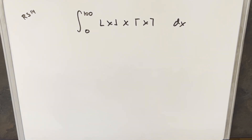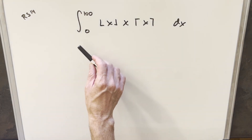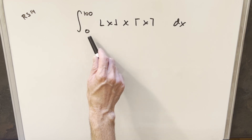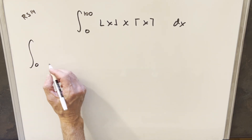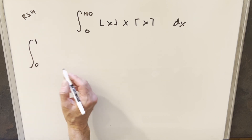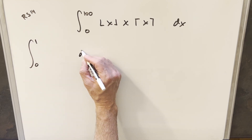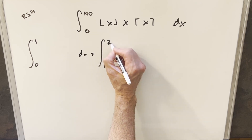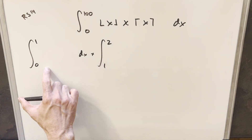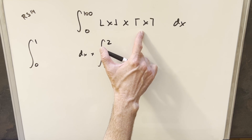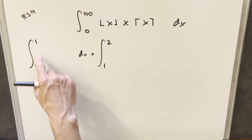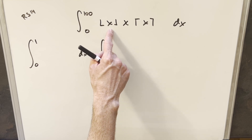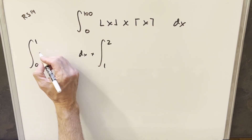I thought this was an interesting problem, just having the floor and ceiling in the same integral. My method on these has been to break up the integral where the bounds just differ by 1. So we can break it up with one integral from 0 to 1, then 1 to 2, and so on. The reason this is so helpful is because with the floor and ceiling, these are going to just become constant values. If we evaluate everything between 0 and 1 with the floor function, that's going to round us down, so that's going to give us 0.